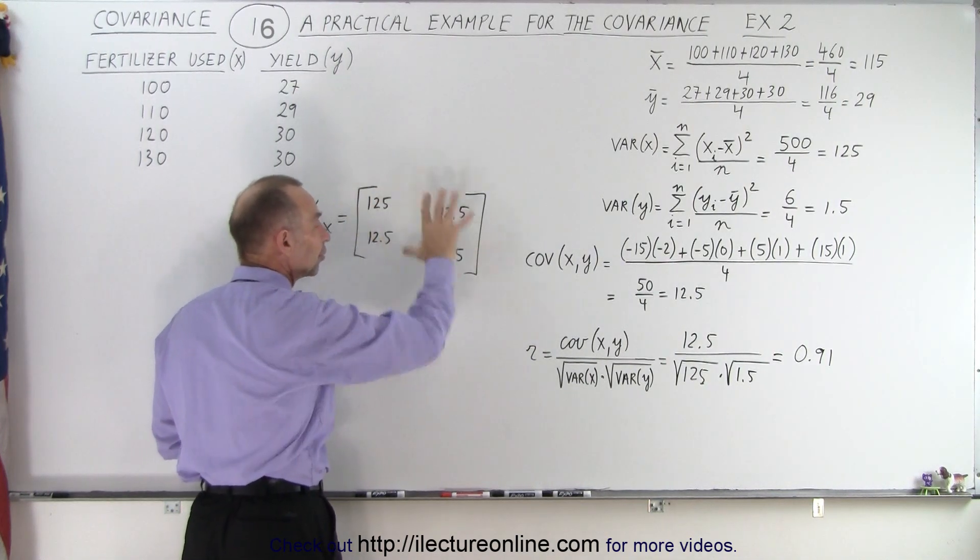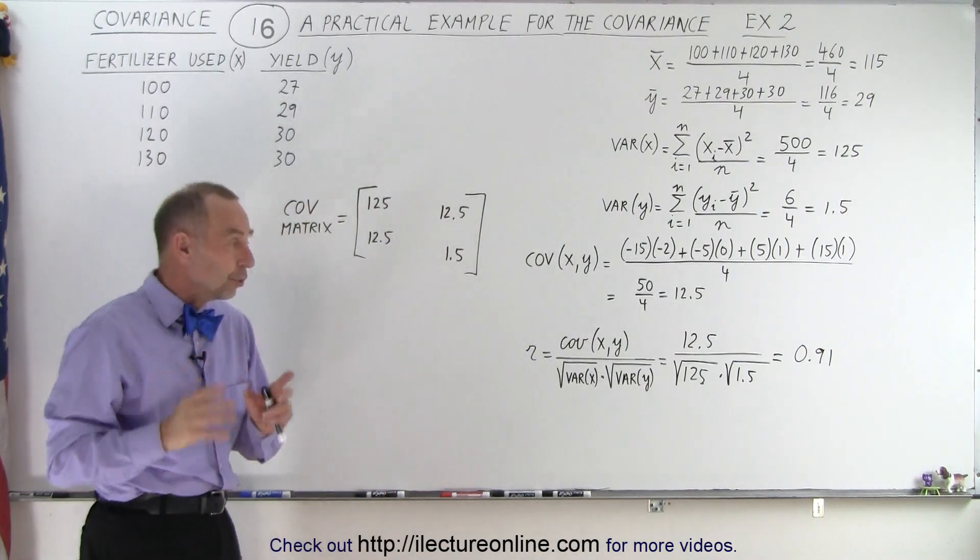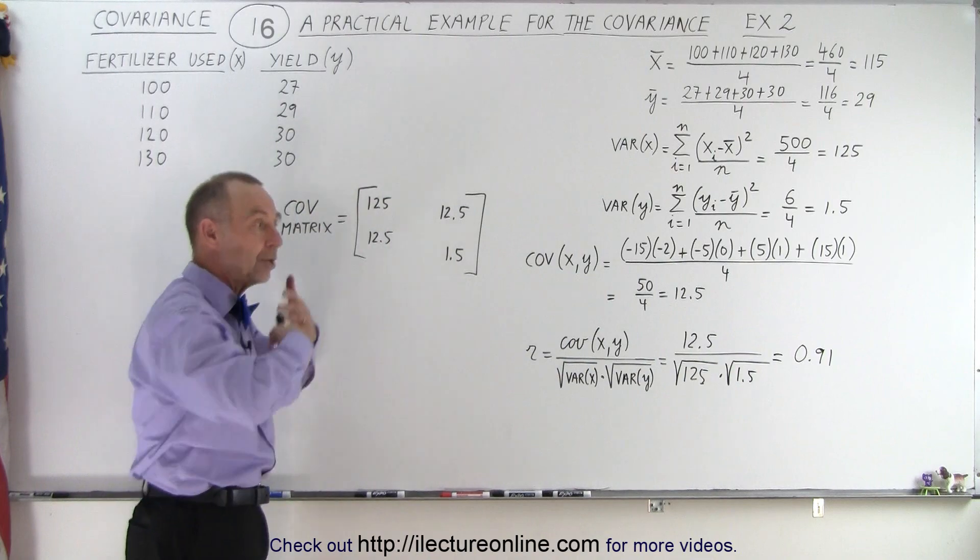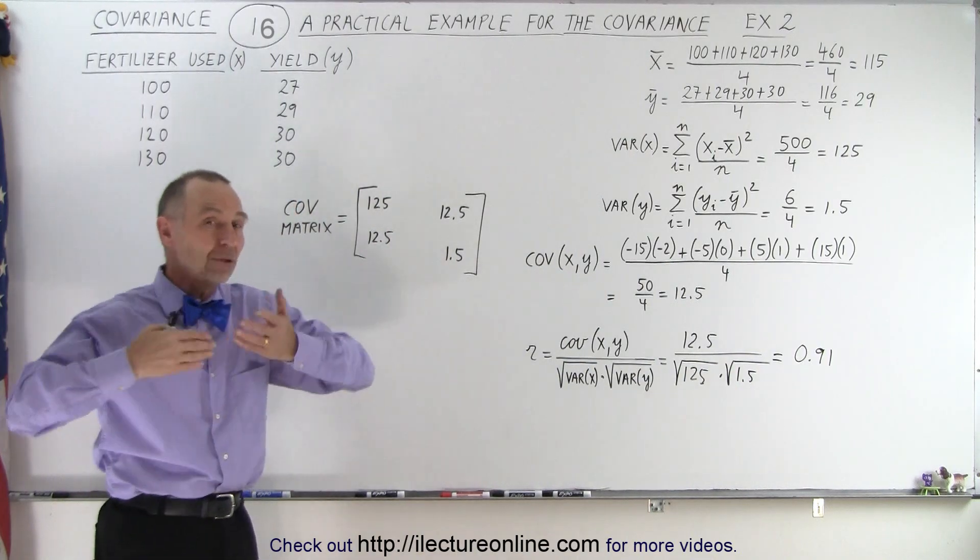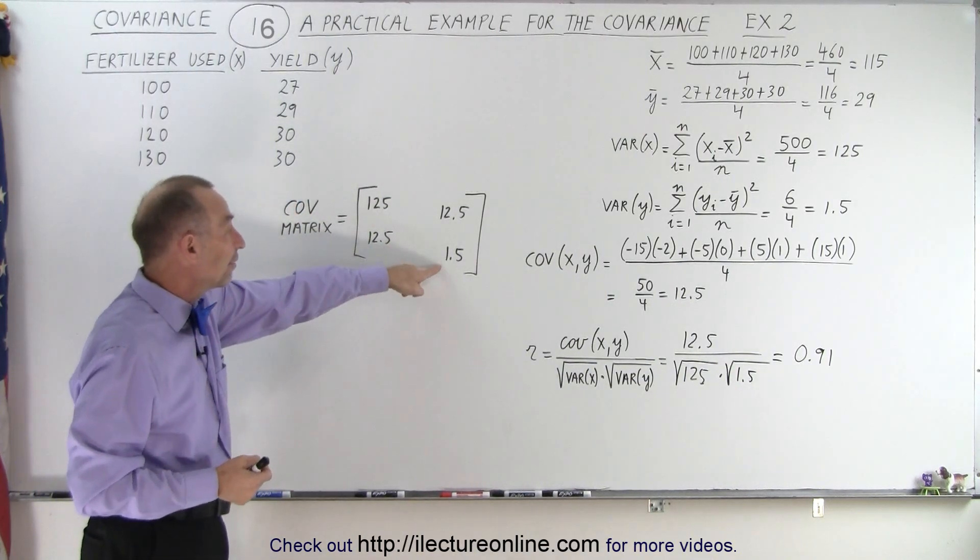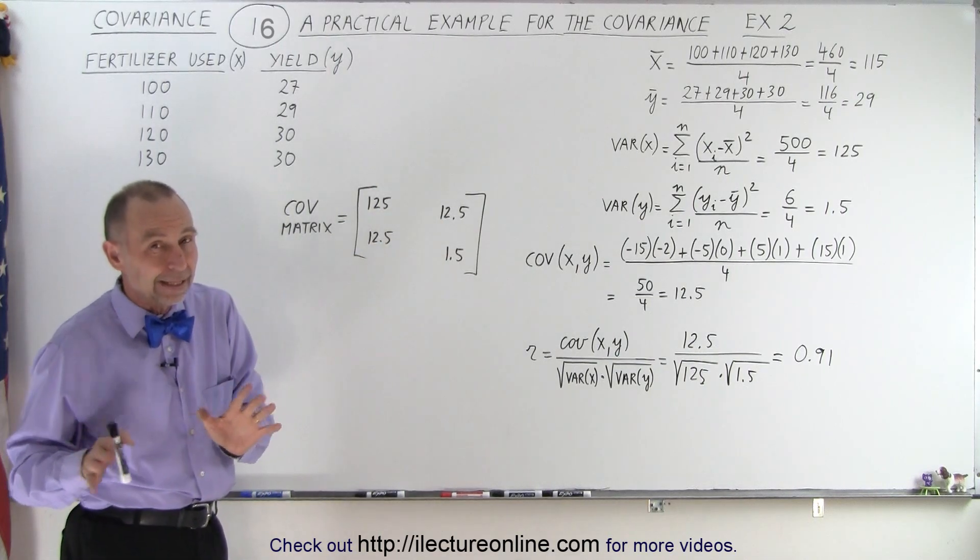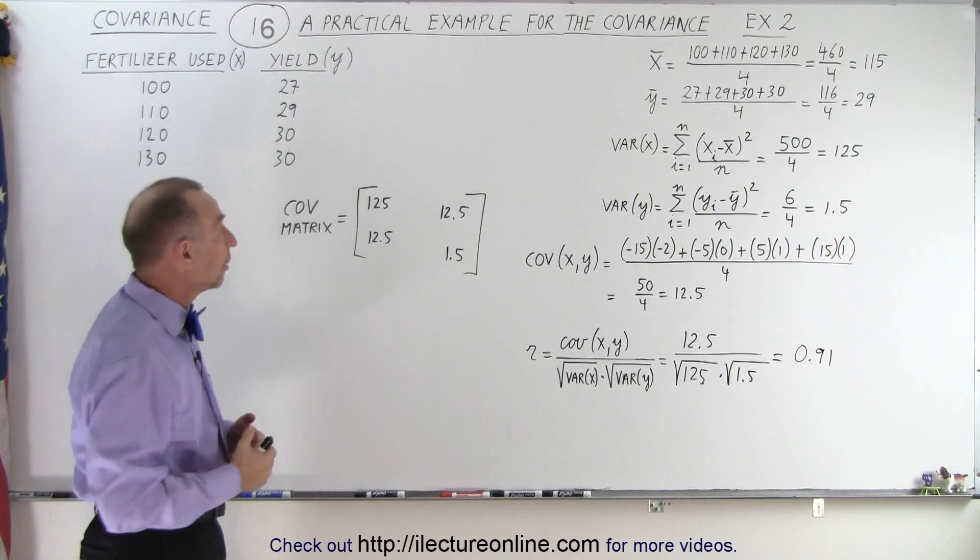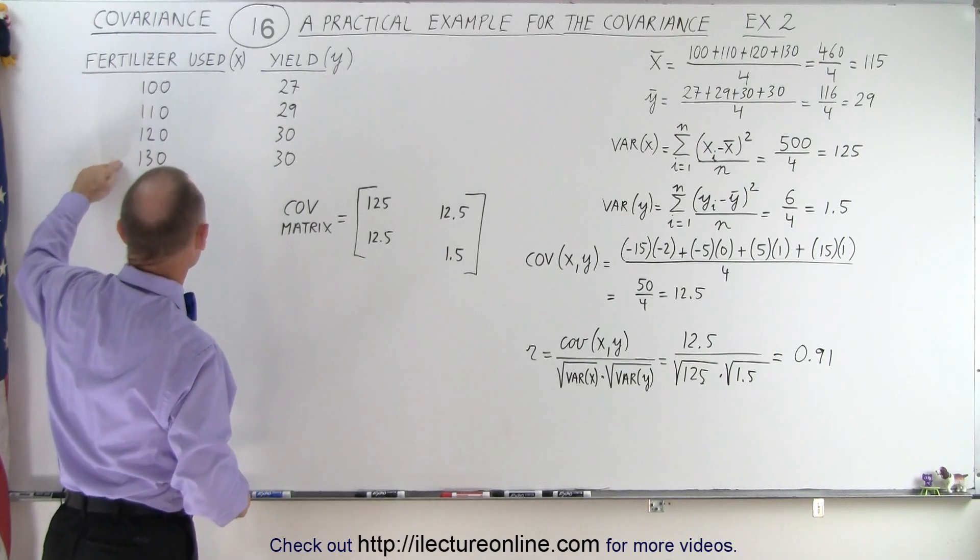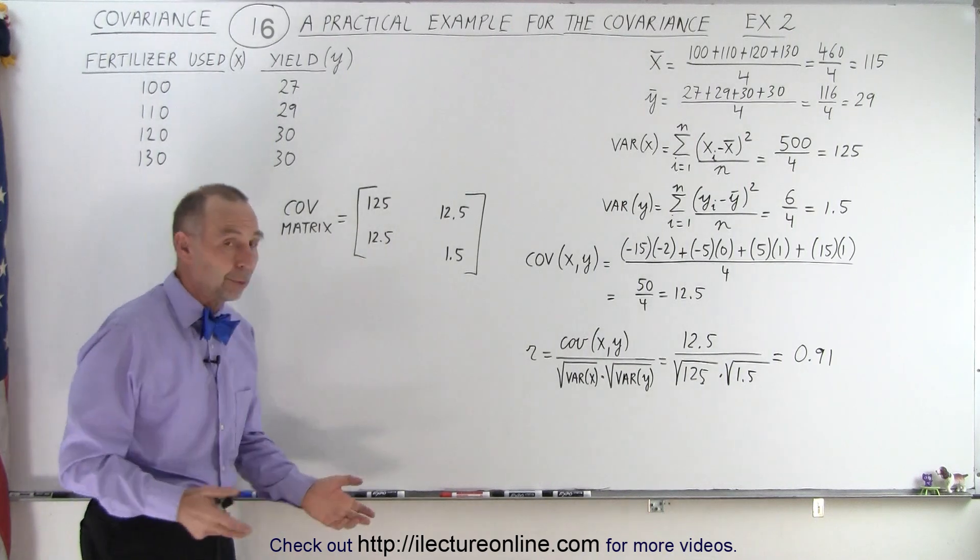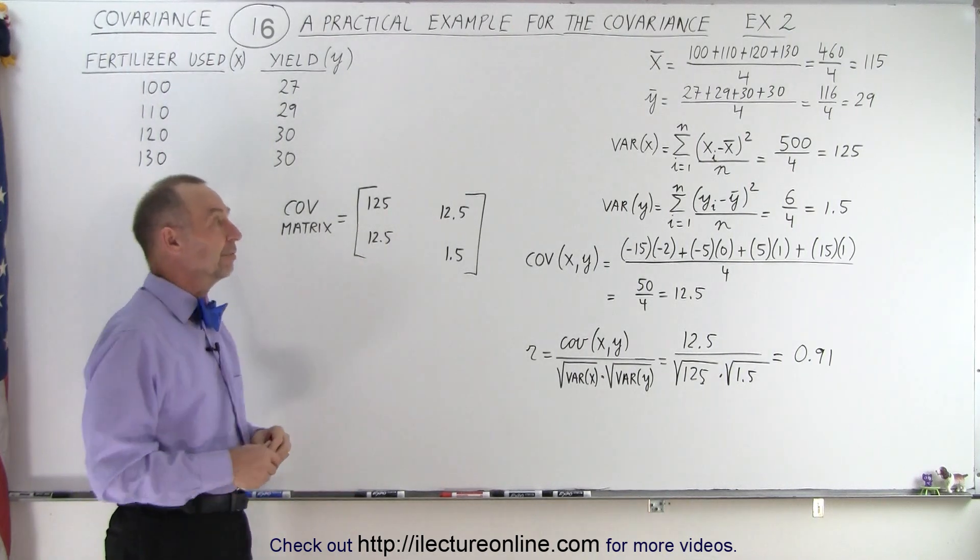So here you can visualize that, yes, even though there's a fairly strong correlation between increase in fertilizer and increase in yield, the amount of increase in yield looking at this covariance matrix doesn't appear to be that large. So you may not want to put in the extra money using this much more fertilizer for a relatively small increase in yield. At some point, it's counterproductive.